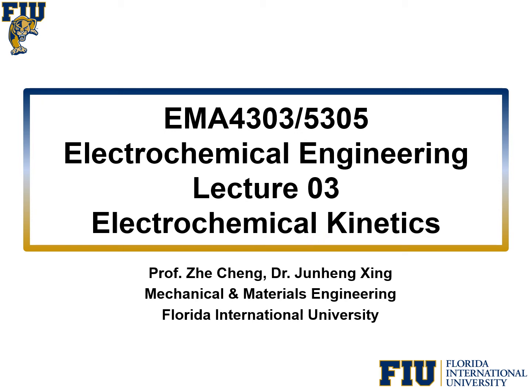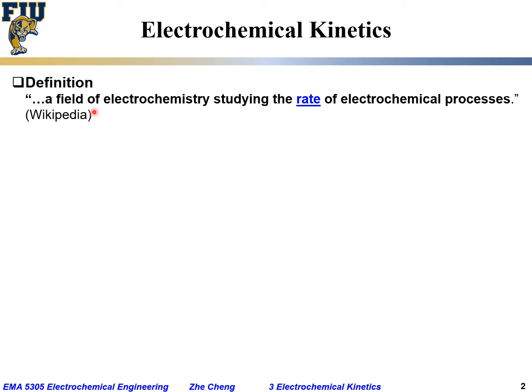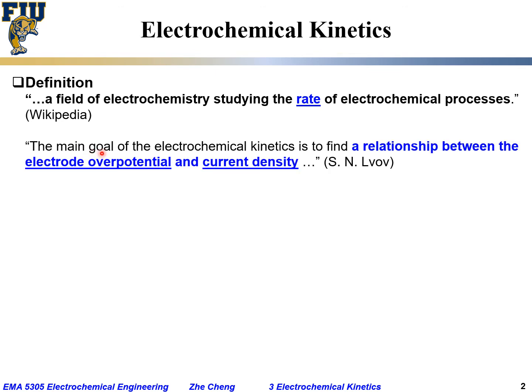So from this class we'll talk about electrochemical kinetics to relate the rate of electrochemical reactions with the cell potential or cell voltage. For a definition, electrochemical kinetics is simply a field of electrochemistry that studies the rate — how fast it happens — for electrochemical processes or reactions. It focuses on studying the rate of electrochemical reactions, and the main goal is to find the relationship between